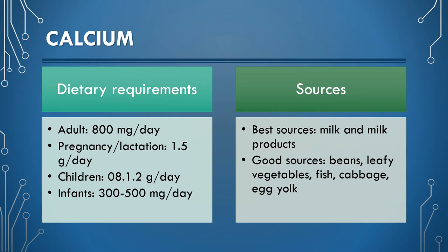The best sources of calcium are milk and milk products. Good sources include beans, vegetables, fish, cabbage, and egg yolk. There are various factors that affect the absorption of calcium from the gastrointestinal tract.